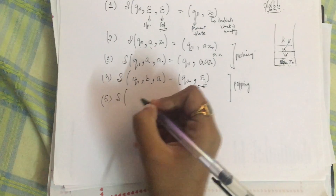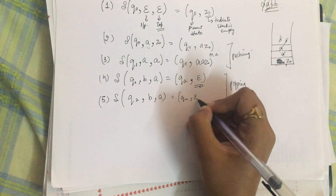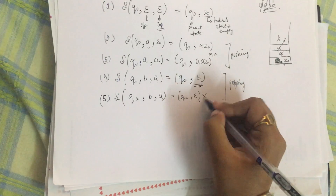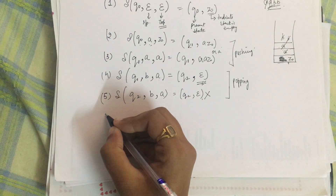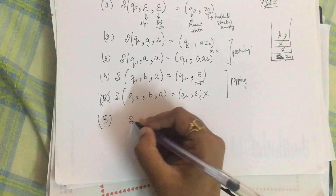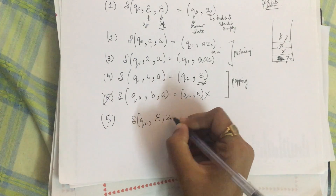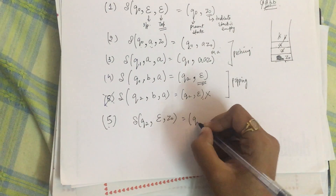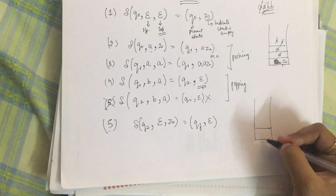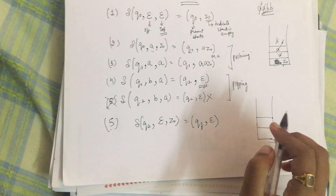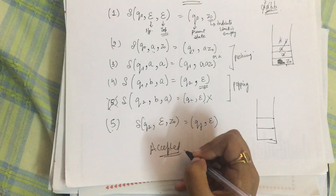Similarly, q2 comma b comma a gives q2 comma null — this is a repetition of the popping step. The last transition is: q2, no input symbol, top of the stack contains z naught, and the automata reaches a final state qf. The stack becomes completely empty — no z naught, no 'a', nothing — and since the stack is empty, the string is accepted.